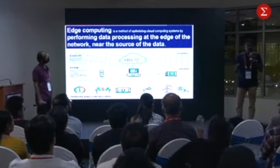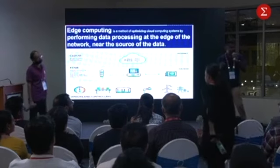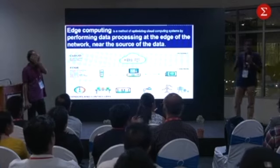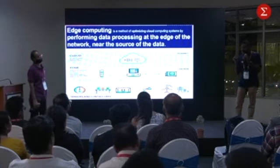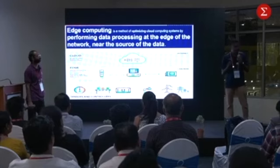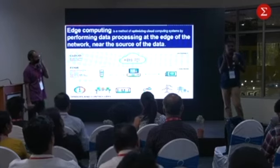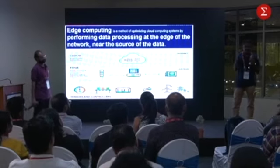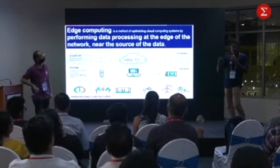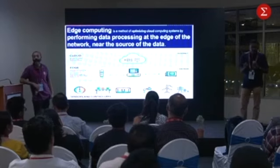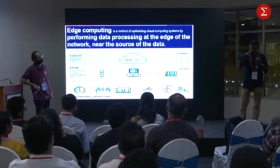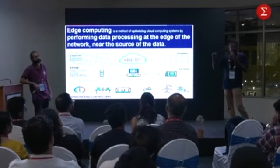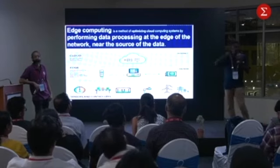Edge, fog, roof computing — they all try to do compute or process closer to the device, in a different way, maybe based on the use case or where you place the device. Earlier we talked about edge meaning the Raspberry Pi, the last device, but that's not necessarily the case. I'm explaining this so that the rest of the slides you understand very easily.